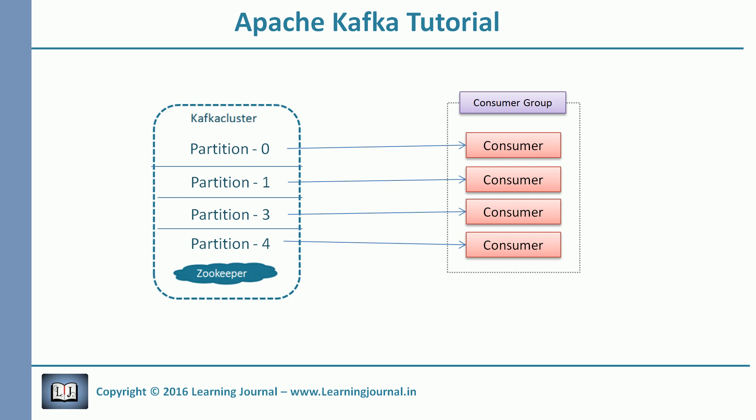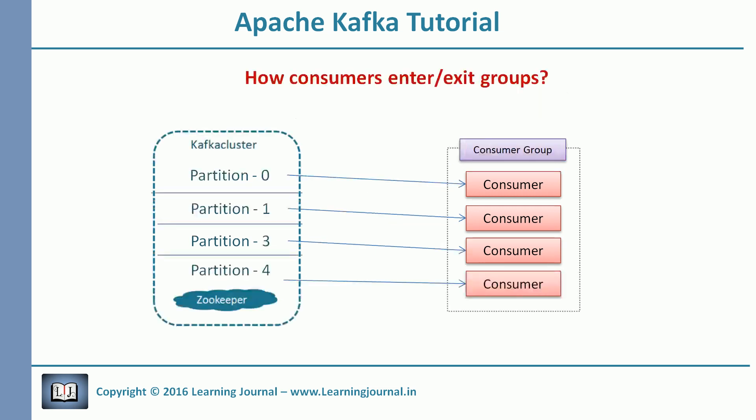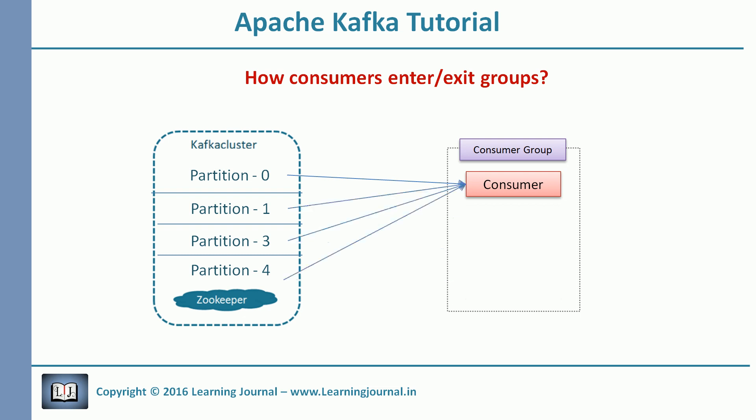However, I have another doubt: how do the consumers enter and exit a group? This question is obvious, isn't it? You started with one consumer and wanted to scale up, so you added one more — now you have two of them. Which partitions should this new consumer read? Who should pull some partitions from the first consumer and assign them to the second consumer? Somebody should be there to manage this.